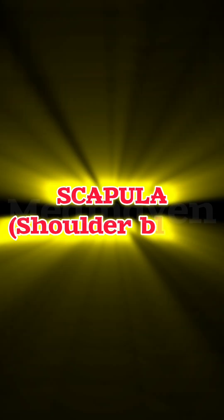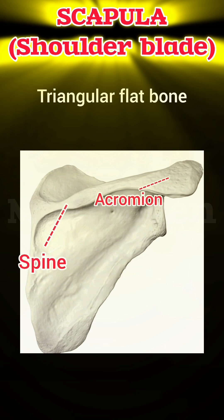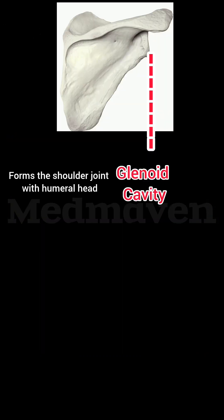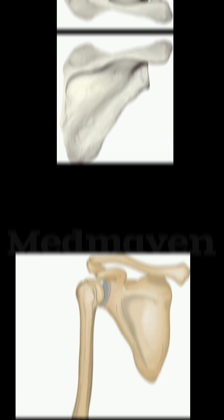The scapula, or shoulder blade, is a triangular flat bone. Its important features include the spine, acromion, glenoid cavity, and coracoid process. The glenoid cavity forms the shoulder joint with the humeral head.